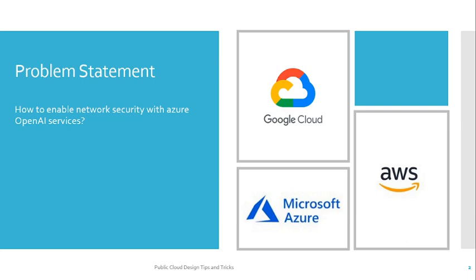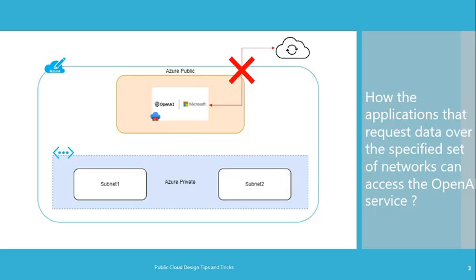The problem statement is: how to enable network security with Azure OpenAI Services? Azure OpenAI Services is a kind of PaaS service sitting in the Azure Public Environment. When you are a private organization and you want to interact with this PaaS service from your private network — from your virtual network or subnet — how can you make the interaction much more secure? Also, how can you restrict the interaction of this PaaS service from the internet? We are going to discuss all the solutions provided by Microsoft Azure for this.